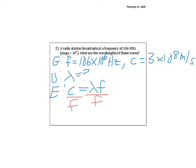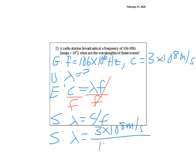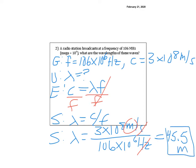The equation is C equals lambda F, but this time I solve for lambda by dividing both sides by F, giving lambda equals C over F. Plugging in: lambda equals 3 times 10 to the 8th meters per second divided by 106 times 10 to the 6th Hertz. In the calculator: 3 EE 8 divided by 106 EE 6. This gives 45.5 — Hertz is 1 over second, so it cancels, leaving 45.5 meters.